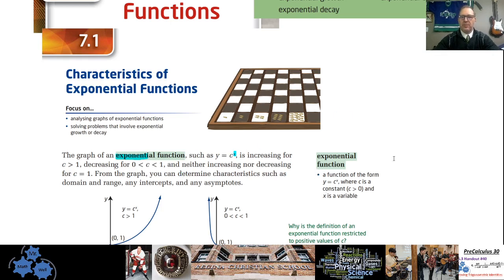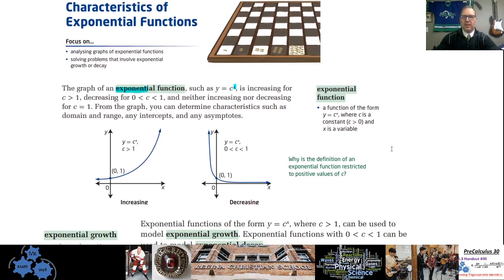The graphs of the exponential functions look like this. Now c is just a regular old constant, it's a number. And the power is the x. So where c is greater than 1, so 1.5 or 2 or 10 or 100, then the graph is increasing, and it kind of goes up in this fashion.